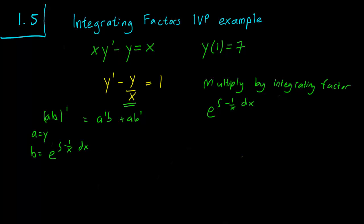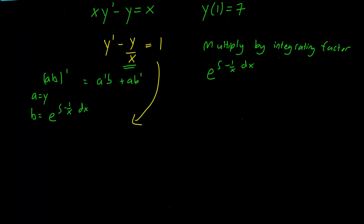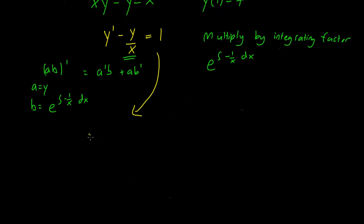So anyway, we have our integrating factor and we have to multiply every term in the equation by that. y prime e to the minus 1 over x dx minus y over x e to the minus 1 over x dx equals e to the minus 1 over x dx.